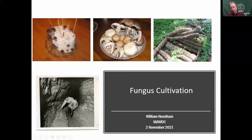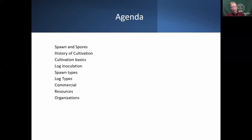We're going to talk about commercial mushrooms — in the center are the white button Agaricus bisporic variants. We're going to talk about log cultivation and spawn in some sort of substrate, usually sawdust chips. We're going to start with history — these are the mushroom caves in Paris where our current mushroom history starts. We'll cover history of cultivation starting with spawn and spores, then some basics, logs, spawn types, and we'll end with resources and organizations.